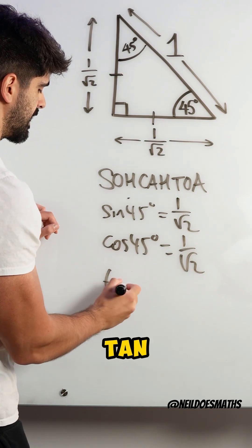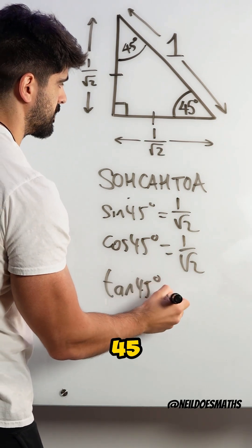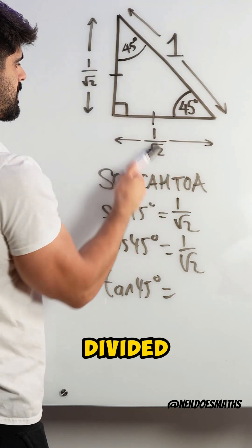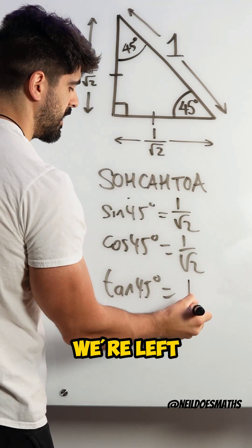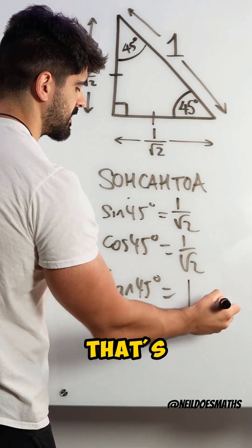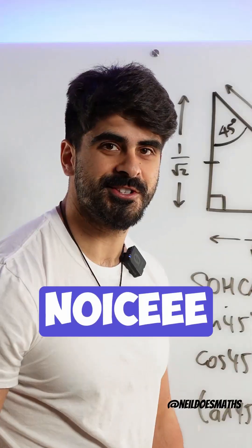Finally, tan. Tan of 45 degrees is the opposite divided by the adjacent. So when we divide them, we're left with 1. And that's how we prove these trig ratios.